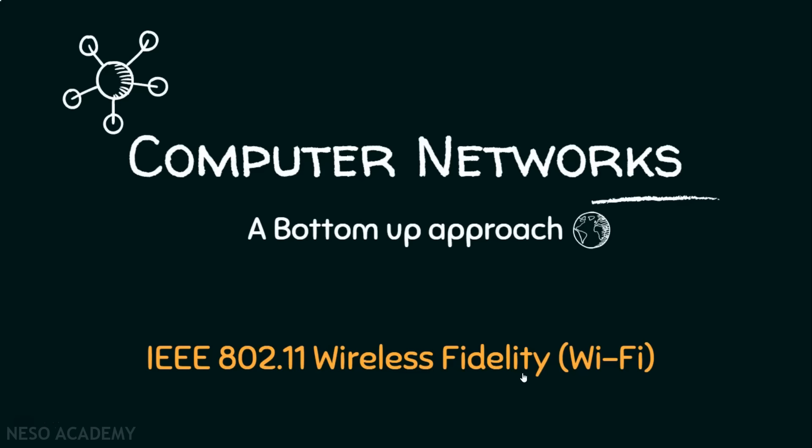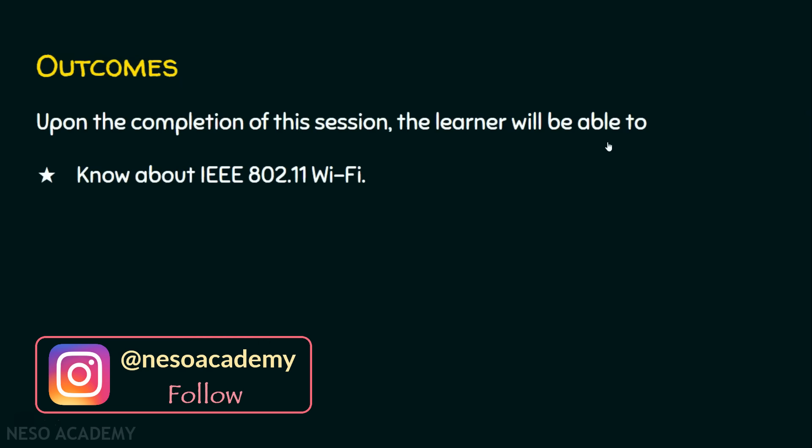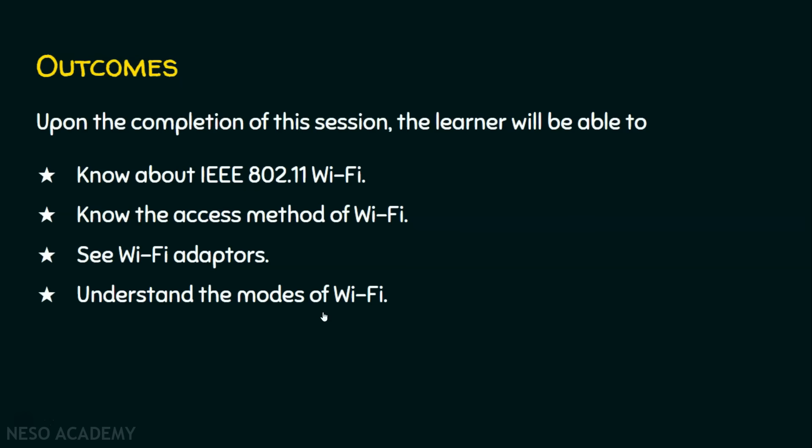Let's start the session with the outcomes. In today's lecture, we have five outcomes. Upon completion of this lecture, the learner will be able to: know about IEEE 802.11 Wi-Fi; know about the access method of Wi-Fi; see Wi-Fi adapters practically; understand the modes of Wi-Fi; and know the different Wi-Fi protocols.